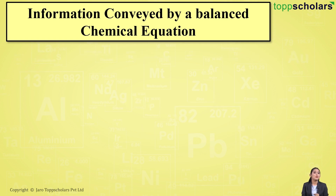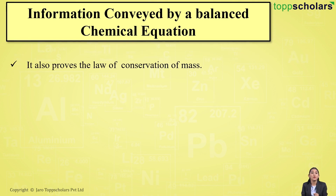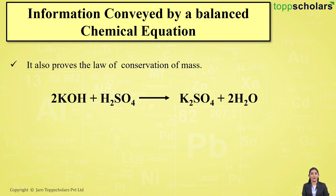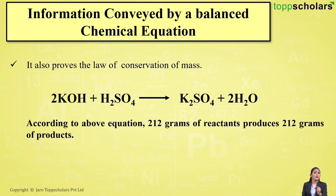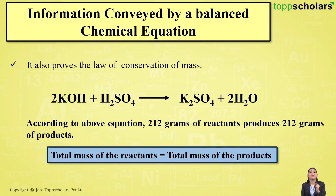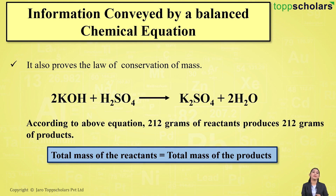The balanced chemical equation also helps us to prove the law of conservation of mass. In this example, 212 grams of reactants gave 212 grams of products, which means the total mass of the reactants equals the total mass of the products. This proves the law of conservation of mass, which states that mass can neither be created nor destroyed, but it can be converted from one form to another.